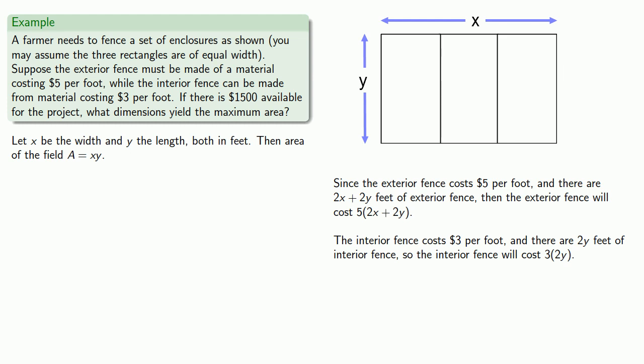And so that means our total cost of the fencing is going to be the cost of the exterior fence plus the cost of the interior fence, which simplifies to 10x plus 16y.